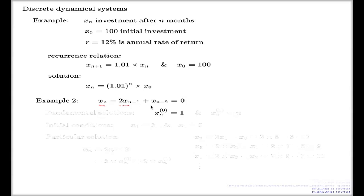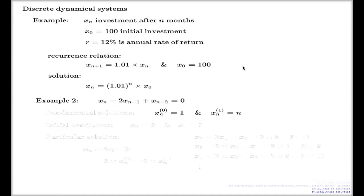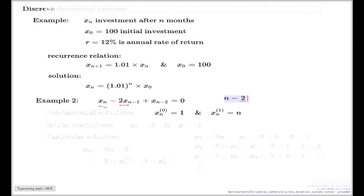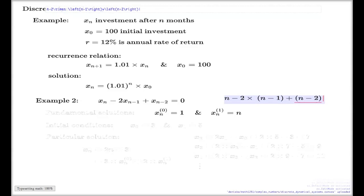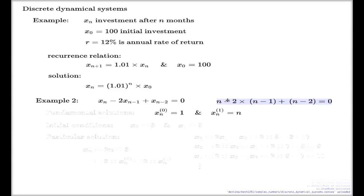If your sequence x_n has constant value 1, it is a solution to this recurrence relation — it's an easy check: 1 minus 2 plus 1 equals 0. Another solution that comes almost immediately if you just try to guess is x_n = n, the integers. You can easily double-check: n minus 2 times (n−1) plus (n−2) equals 0. It's an easy check again.